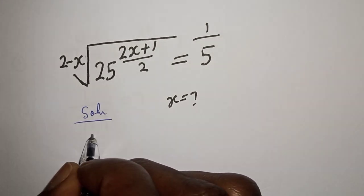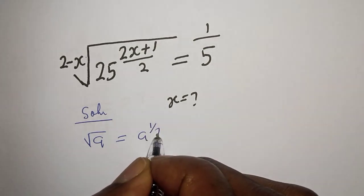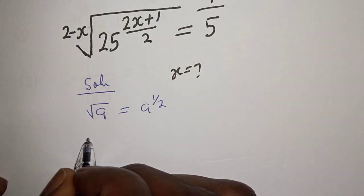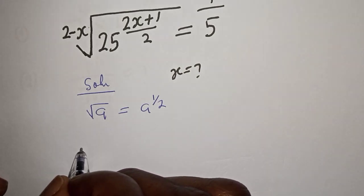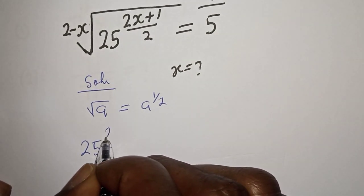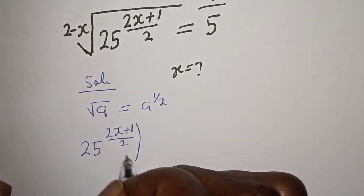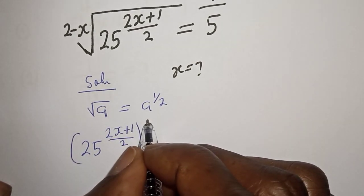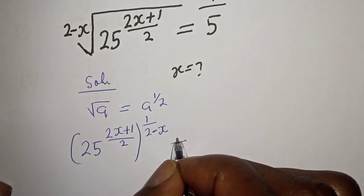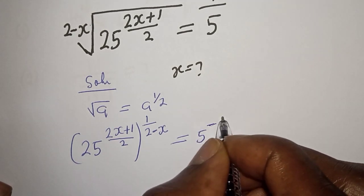If you have square root of a, this is equal to a raised to power 1 over 2. Then the whole expression can be written as 25 raised to power (2x plus 1 over 2) raised to power (1 over 2 minus x), and this must be equal to 5 raised to power minus 1.